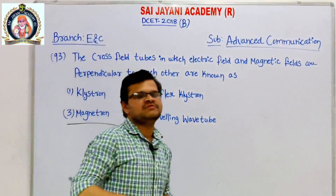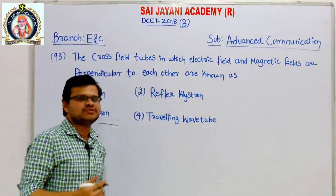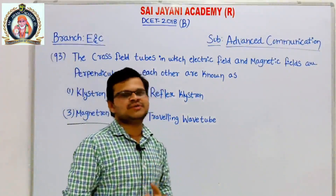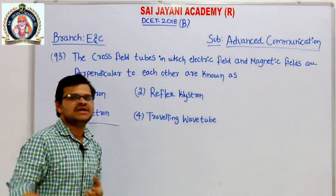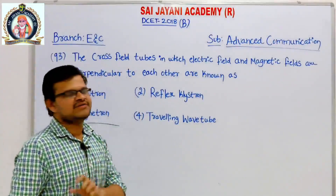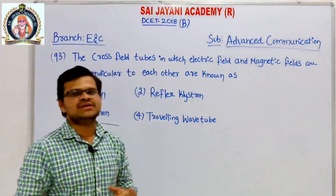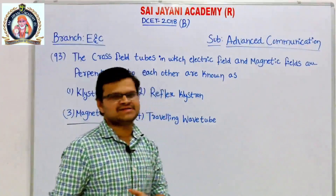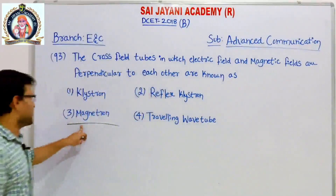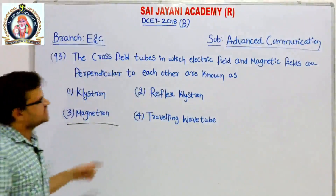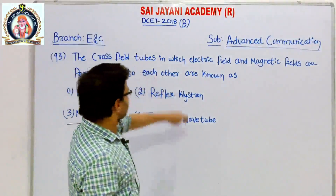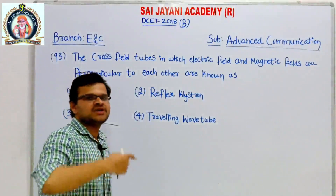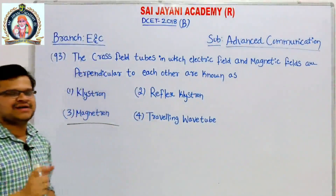The Magnetron is a vacuum tube used for the generation of high-power microwaves. Its working principle is based on the interaction between the electron stream (electric field) and the magnetic field. When they are perpendicular to each other, high power output is produced, which is typically used in radar systems. So the cross-field tubes in which electric and magnetic fields are perpendicular are known as Magnetron.